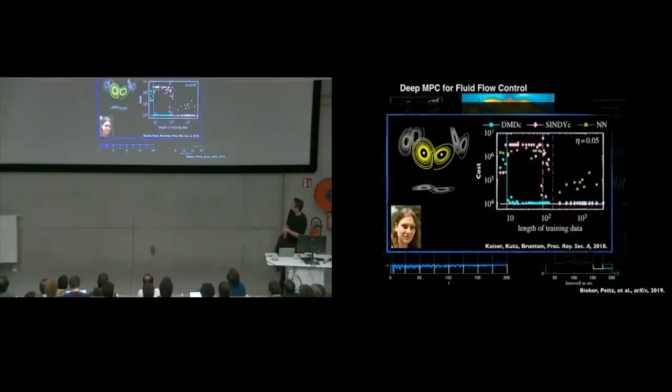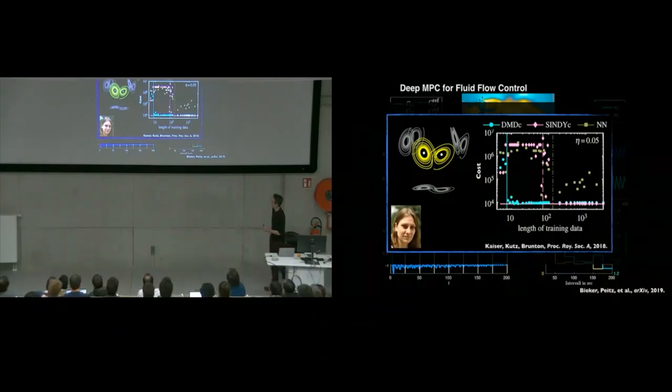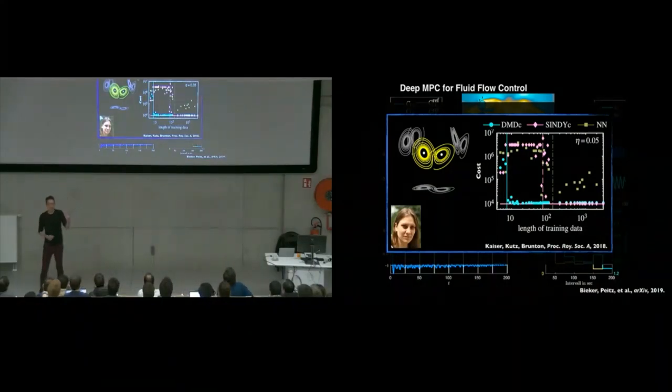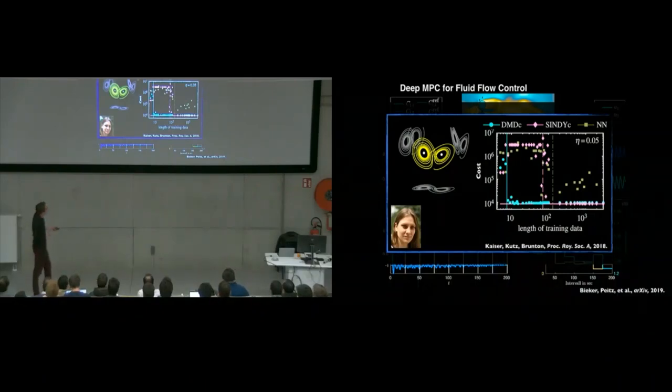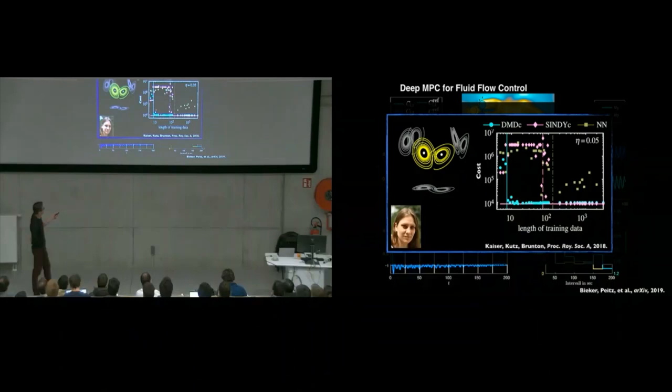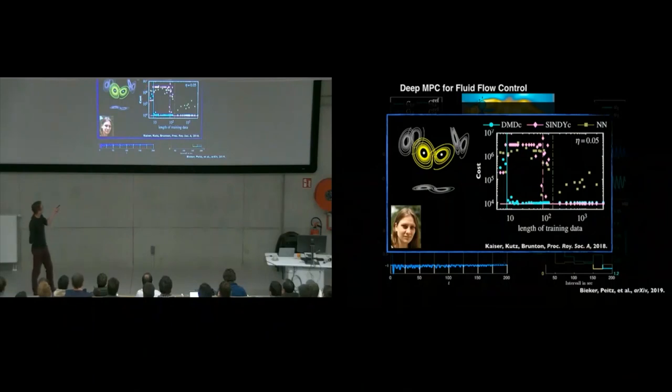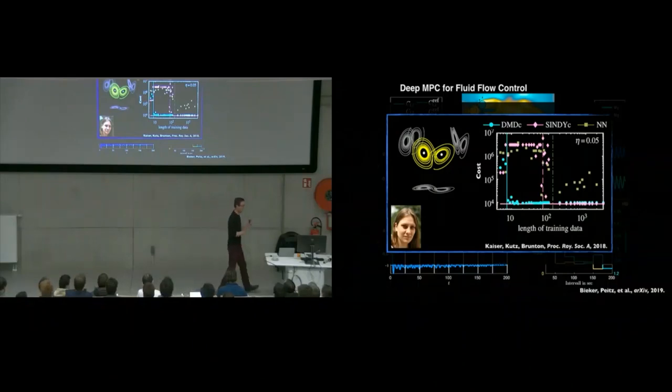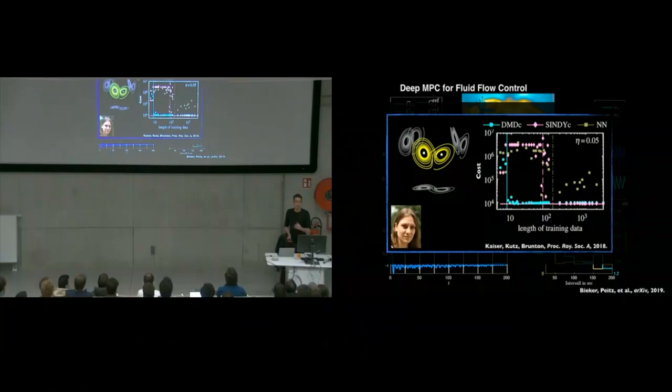There's some kind of interesting related work by Eureka Kaiser. She basically compared how good model predictive control is with different types of models: CINDY models, neural network models, and DMD with control models. What's remarkable, this is on a log scale of length of training data. Almost immediately, within less than 10 data samples, the dynamic mode decomposition with control model learns enough about this little Lorentz system where linear models suck. DMD with control learns enough about the system for model predictive control to be nearly optimal within less than 10 data snapshots. The takeaway here is that model predictive control is so forgiving, you can often use linear models for very nonlinear systems. I highly recommend trying that before you build a neural network.